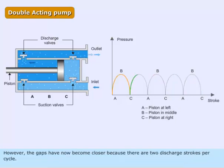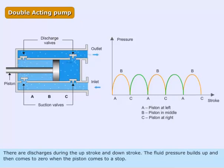The gaps have now become closer because there are two discharge strokes per cycle. There are discharges during the up stroke and down stroke. The fluid pressure builds up and then comes to zero when the piston comes to a stop.